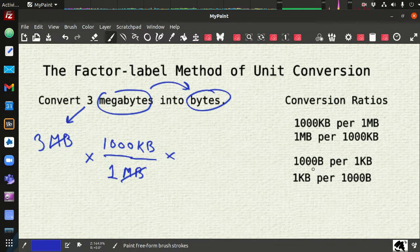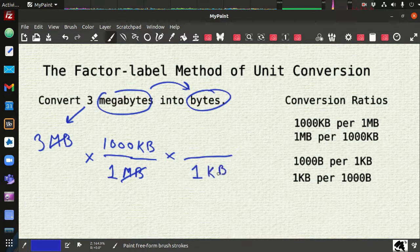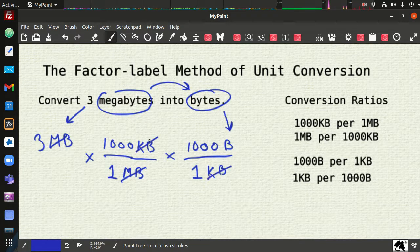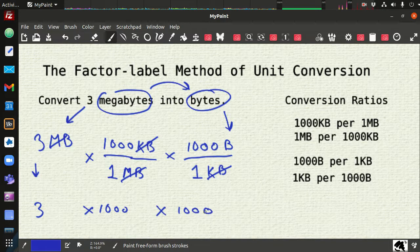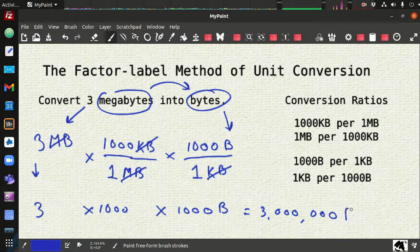But kilobytes is not our goal. We want bytes. So we want kilobytes here. Since the kilobytes over here is in the numerator, we want that to be in the denominator. So we have to arrange our conversion ratio as such. So one kilobyte per 1,000 bytes. And now we have our goal. We see the kilobytes cross out. So now all we're left with is multiplication. That's 3 times 1,000 times 1,000. But we keep our unit. These other units disappeared. So we don't bring those down. So 1,000 times 1,000 is a million times 3. So that's 3 million bytes.